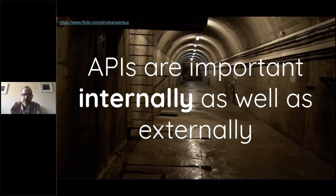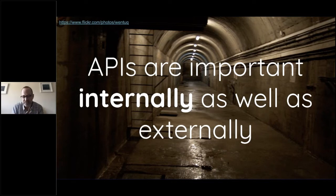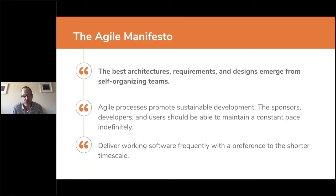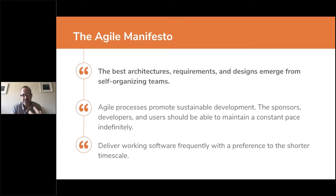I also want to talk about APIs inside an organization, because the concept of ecosystems applies just as much internally as externally. The agile manifesto says the best architectures, requirements, and designs emerge from self-organizing teams. A self-organizing team is one that decides how it's going to solve problems themselves, comes up with its own measures and education plans, and works as a small team effectively together.